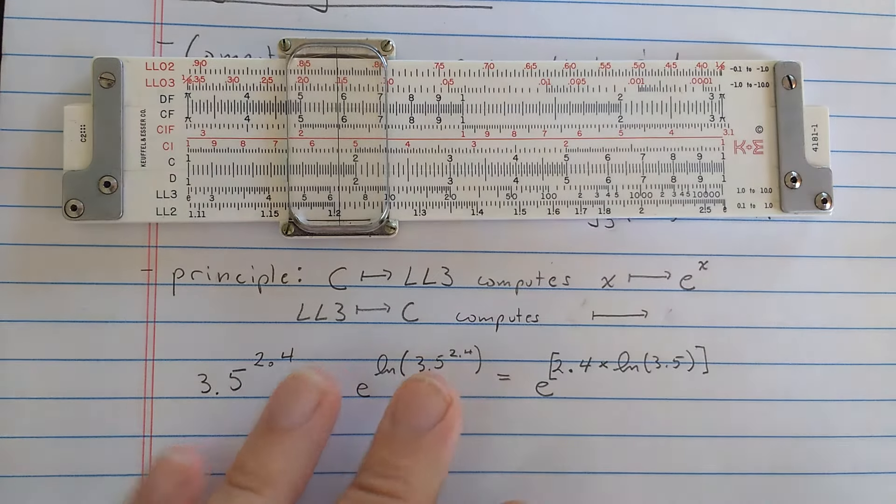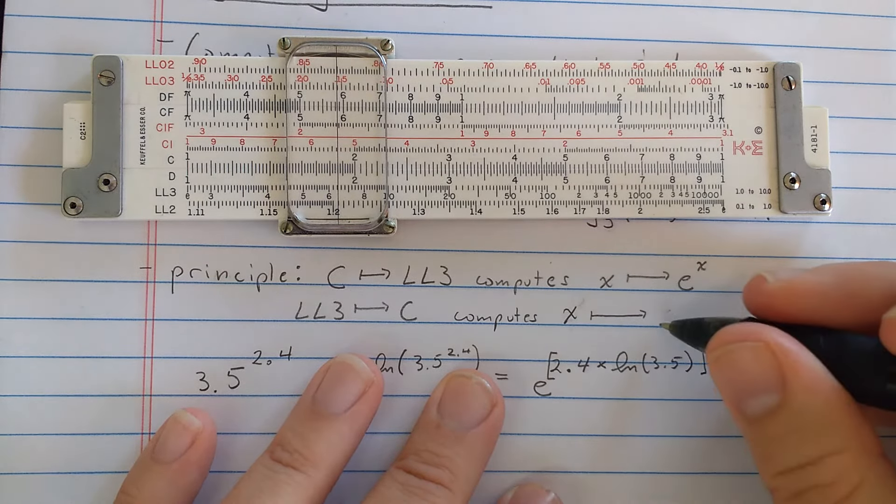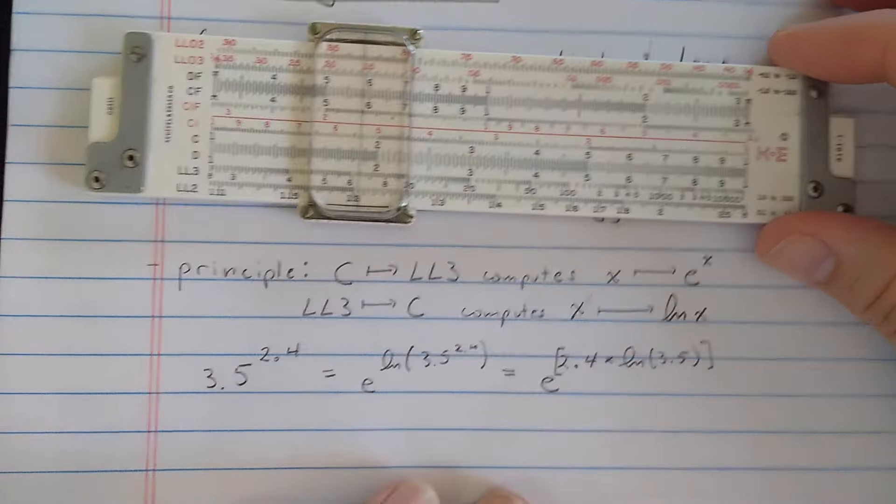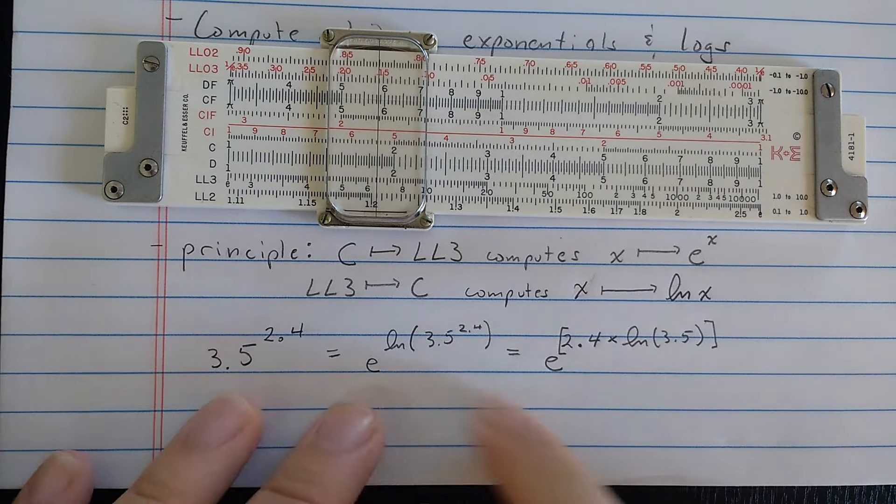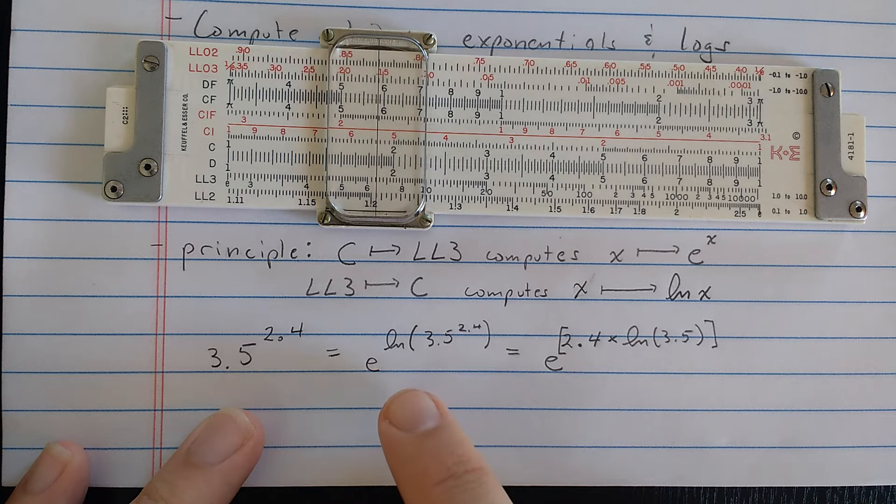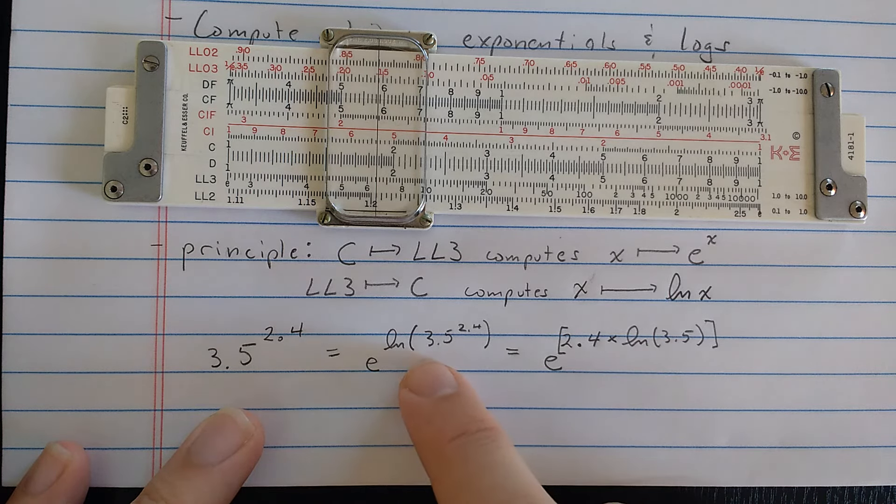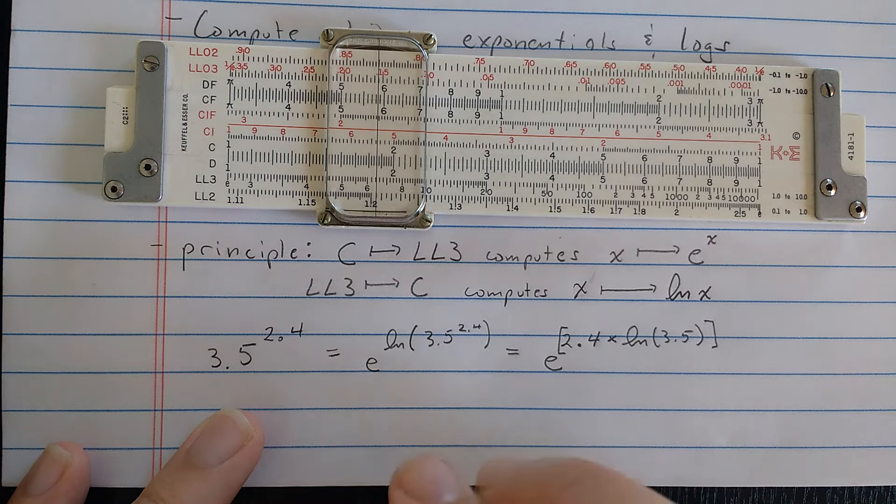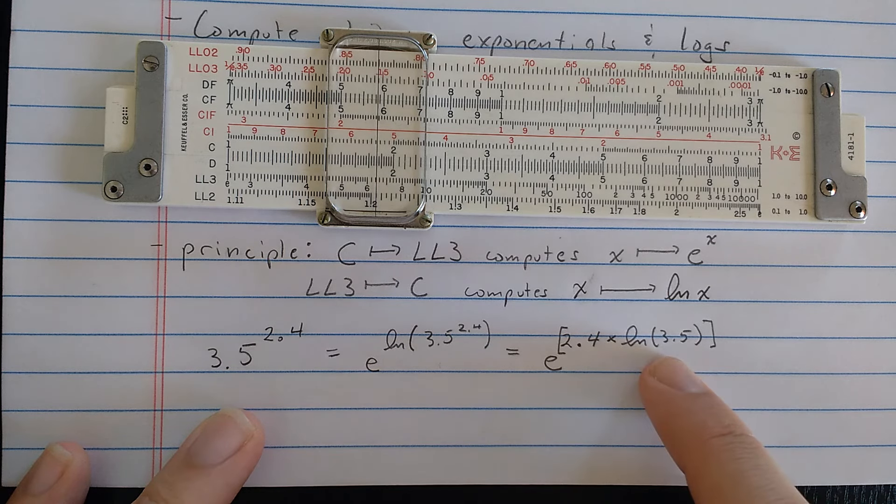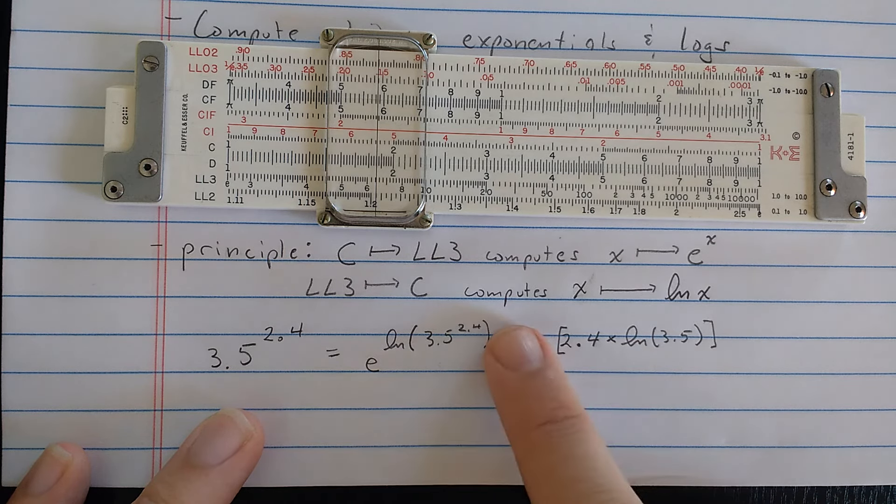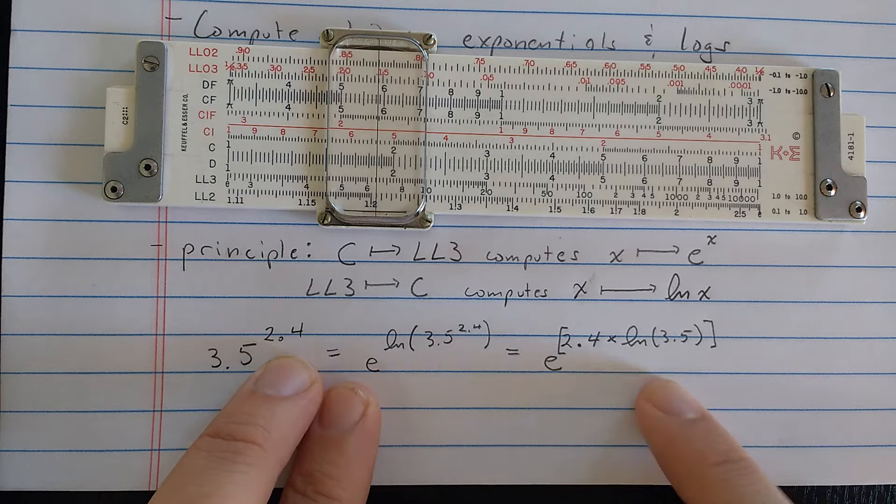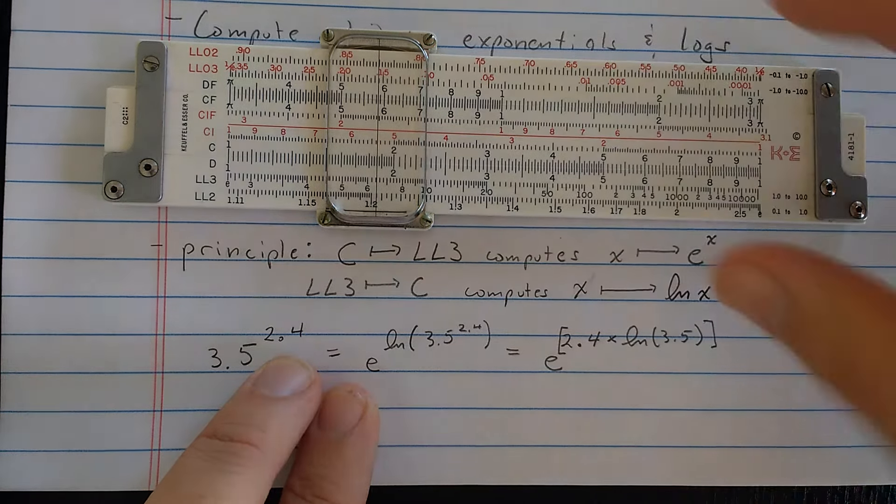So let's analyze how this computation works. So here I've done a little identity. So 3.5 to the 2.4, I can write that as e to the natural log of 3.5 to the 2.4. These are inverse functions, remember. Now, in the exponent here, I'm going to apply this log rule for the natural log. So this 2.4 exponent comes down. And you can see to compute this 3.5 to the 2.4, I'm going to follow this sequence of operations starting with this natural log, right? So to compute natural log, I should find on the log-log-3 scale the 3.5.